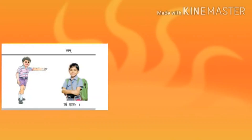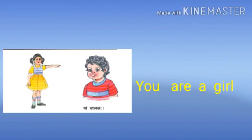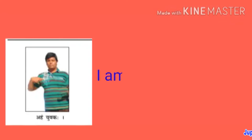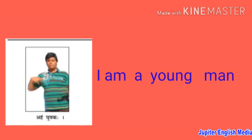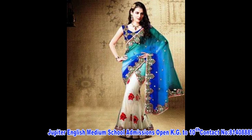Tvam Shikshakaha — you are a student. The next multi-gender Ekavachnam example: Aham — I am a girl. Tvam — you are a boy. The next example is Aham — I am a young man. Tvam — you are a young man. These demonstrate how Aham and Tvam serve as multi-gender pronouns.